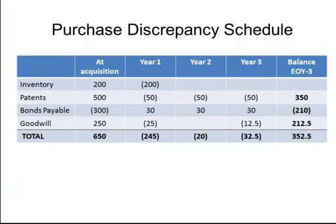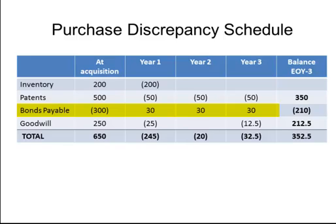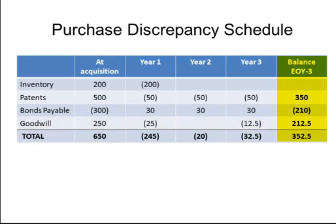This schedule too is the same. The excess fair value increments for inventory and patents will reverse as depicted here. The bonds payable had a fair value in excess of carry value at the date of acquisition, which will be amortized over the life of the bonds using the effective interest rate method. Goodwill is not amortized; however, it is subject to an annual impairment test, and we've made some assumptions around impairment charges in years 1 and 3. Keep the ending balances of the unamortized purchase price discrepancy in mind, as these will factor into the consolidated balance sheet.